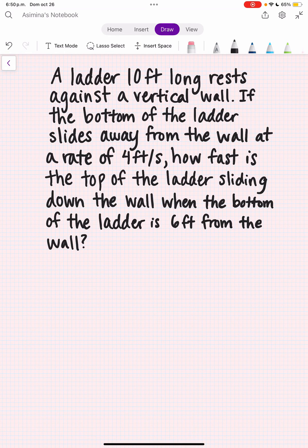In this video, we're going to sketch how to do the following related rates problem. A ladder 10 feet long rests against a vertical wall. If the bottom of the ladder slides away from the wall at a rate of 4 feet per second, how fast is the top of the ladder sliding down the wall when the bottom of the ladder is 6 feet from the wall?